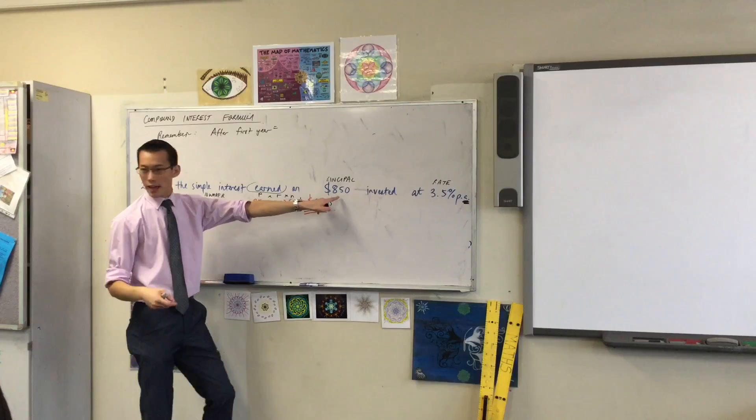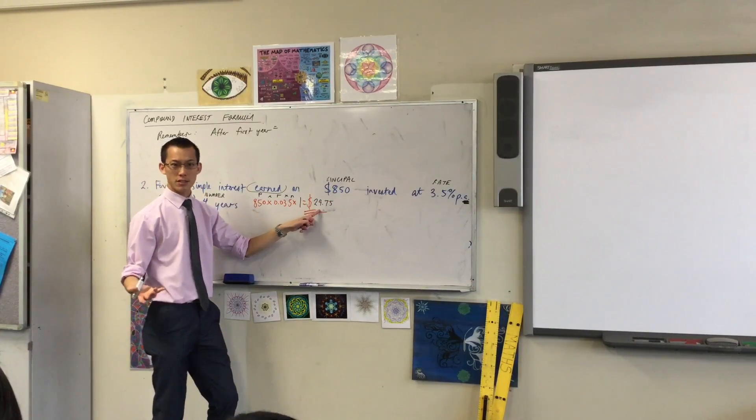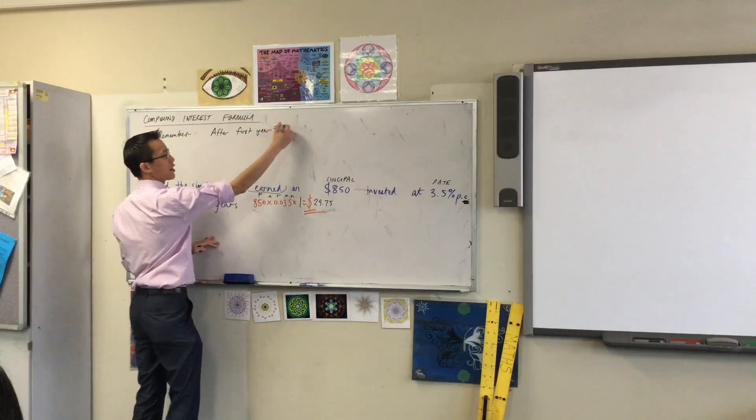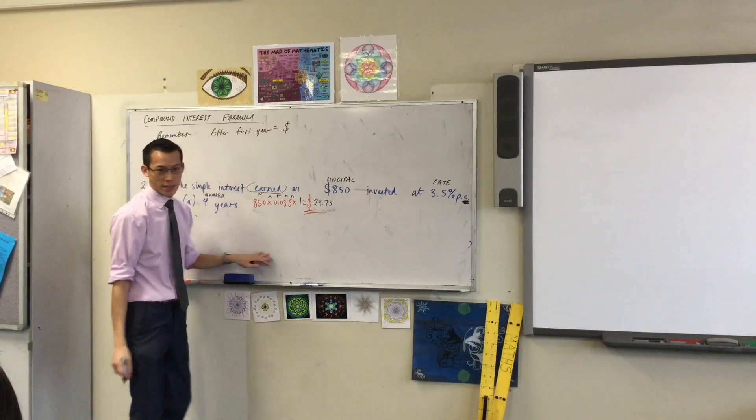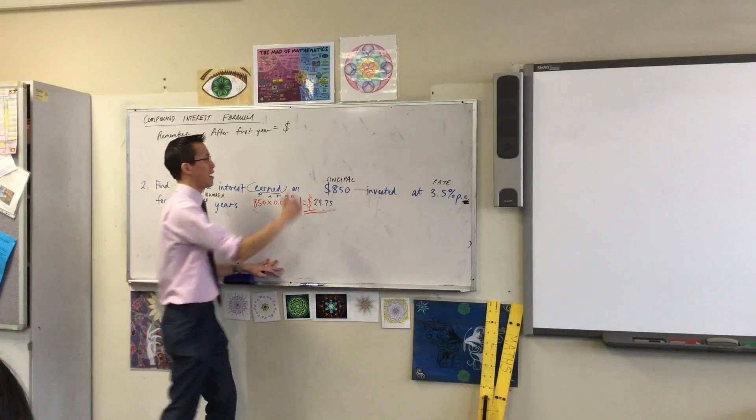You'd say, alright, at the end of the first year I've got the original $850 and then I've got this extra bit of interest that I calculated, so I'm just going to add them up. At the end of that year I'm going to have $879.75.